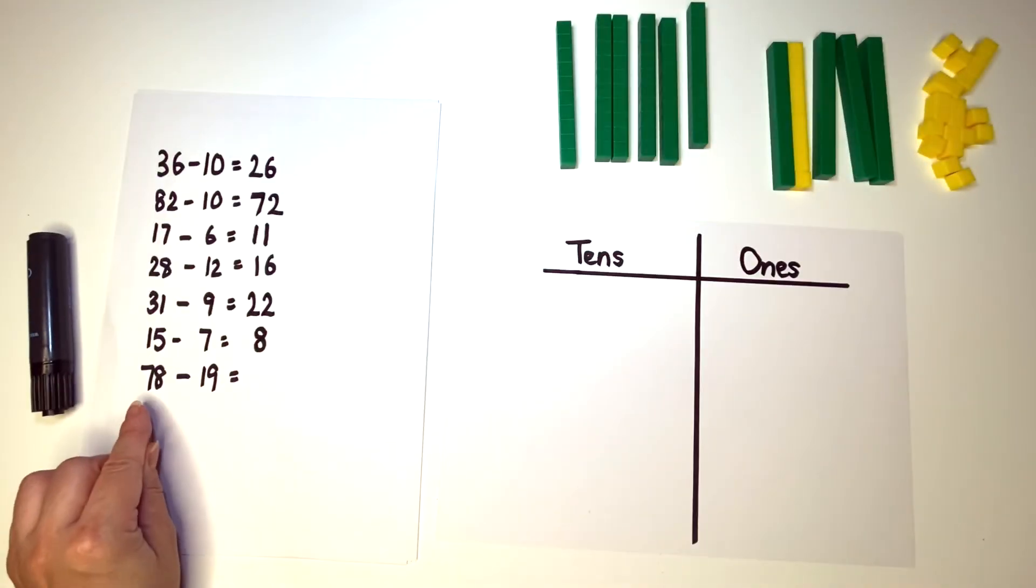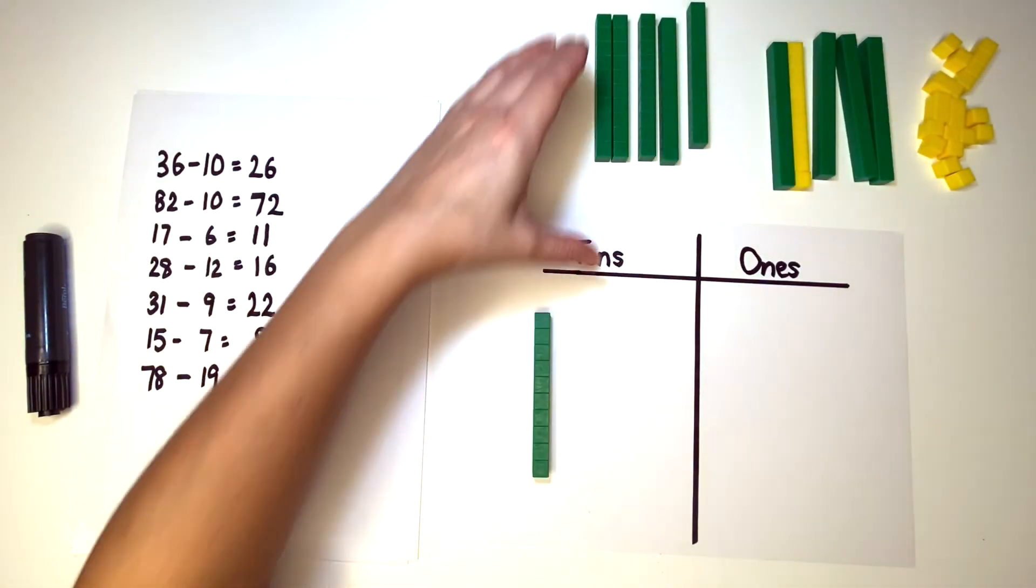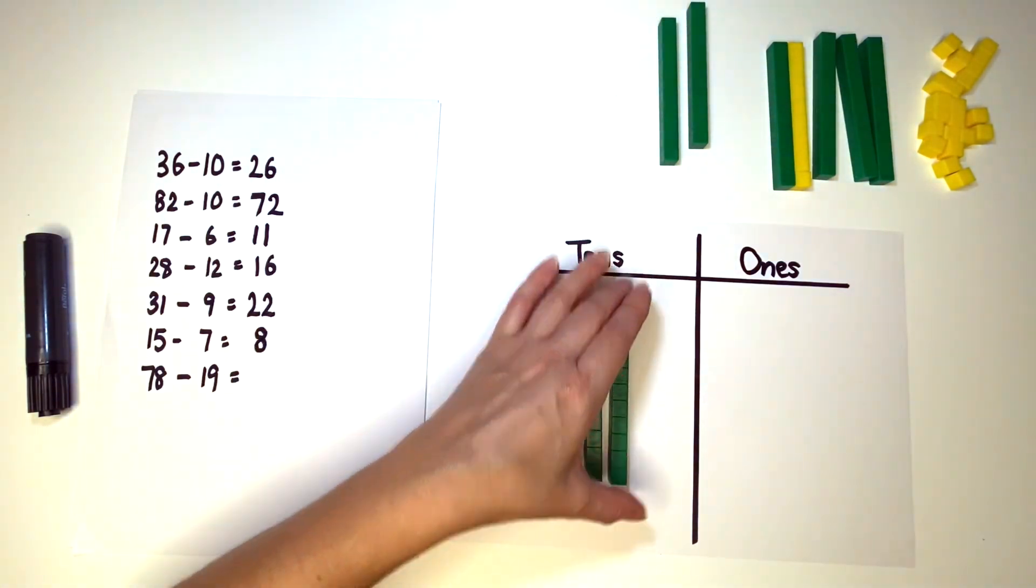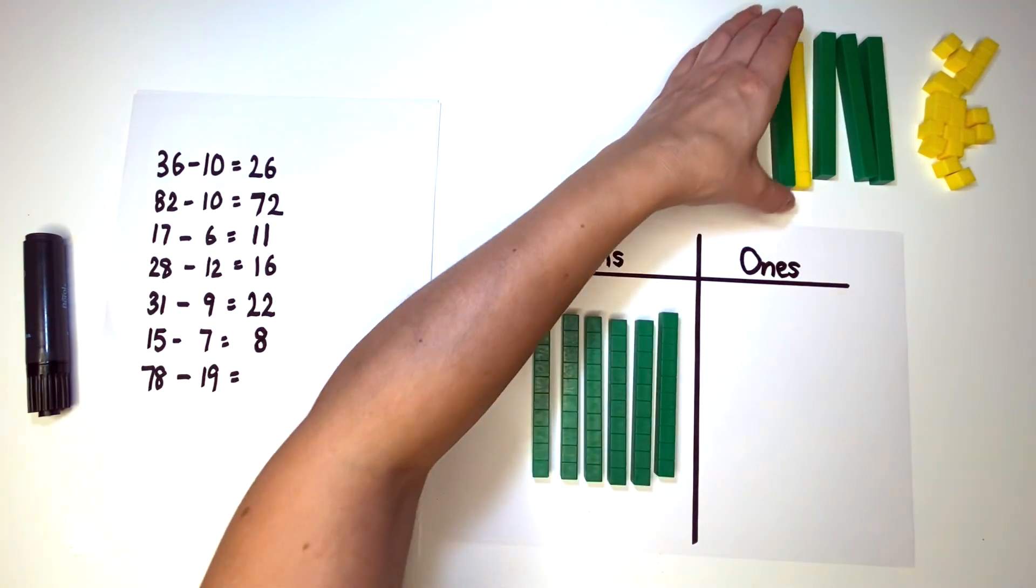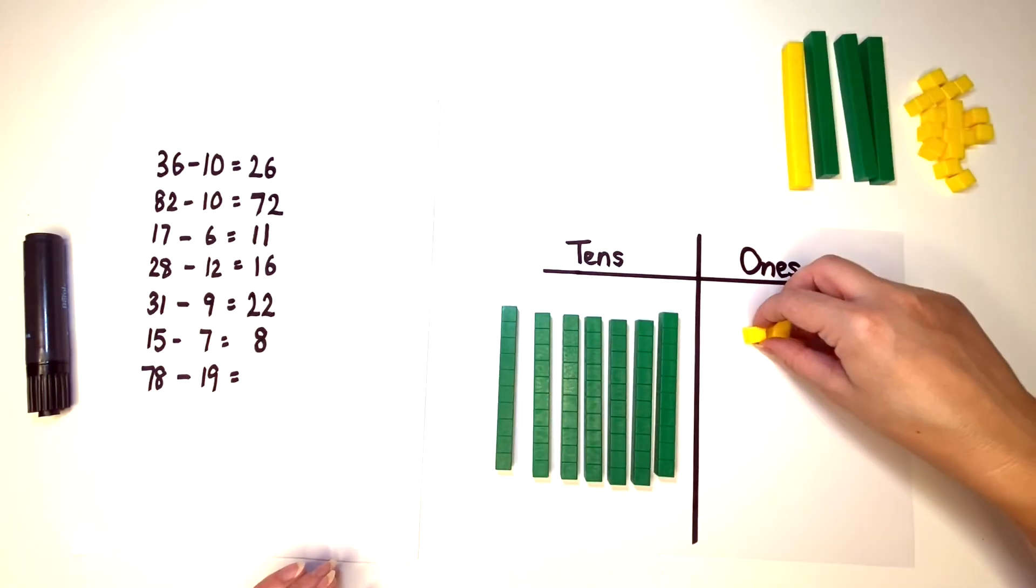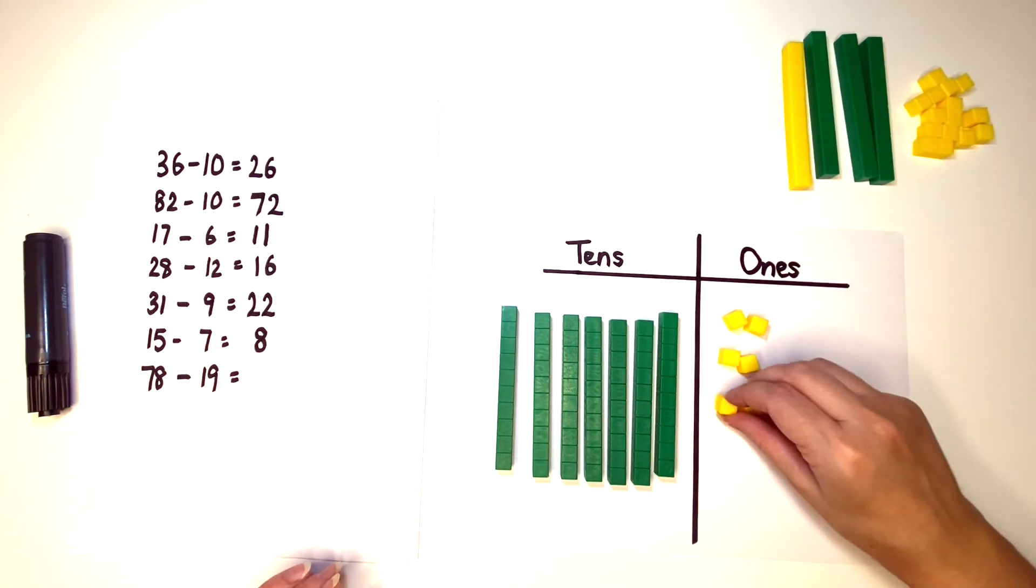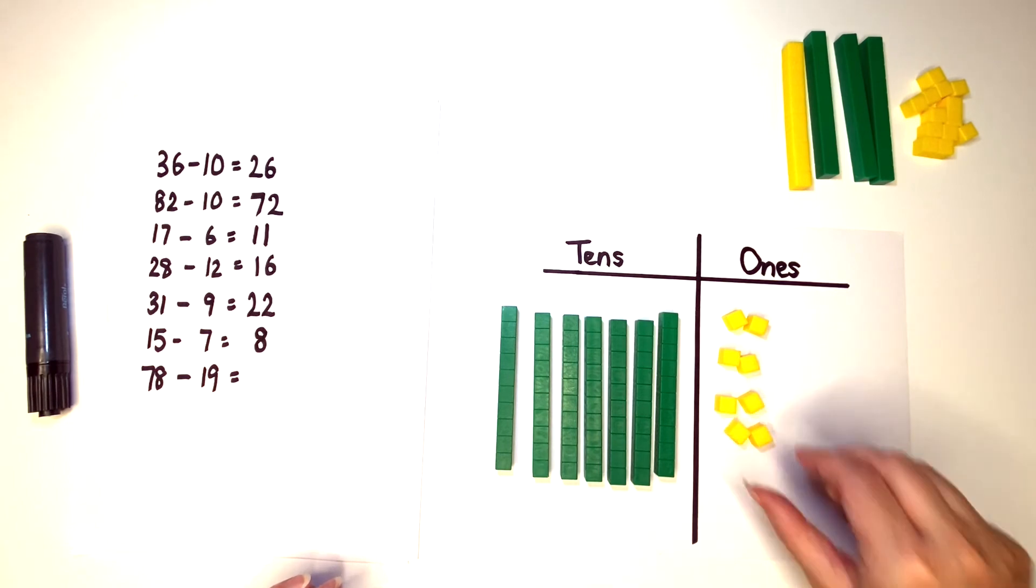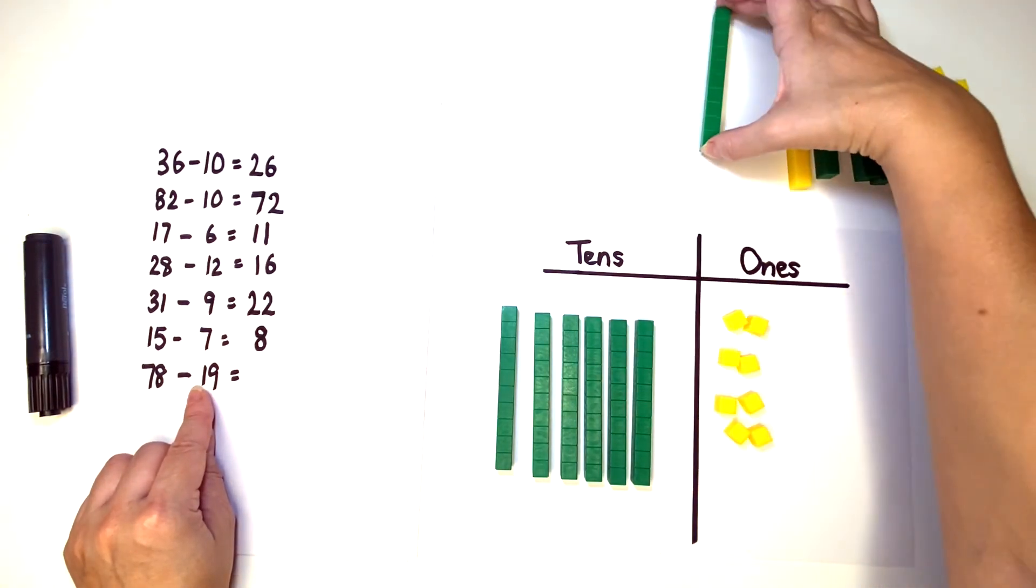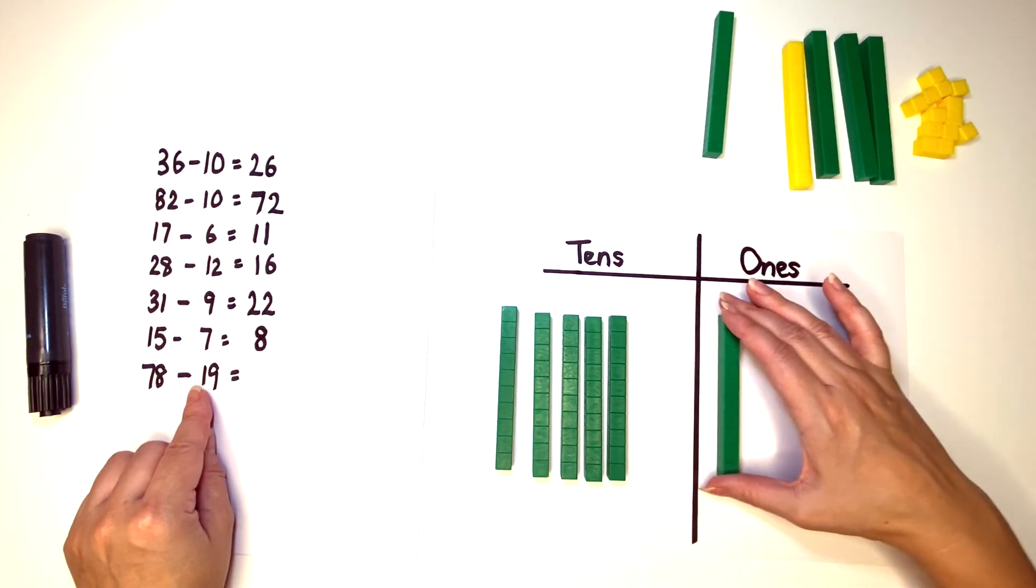Our last number sentence is seventy eight minus nineteen. One, two, three, four, five, six, seven. I need to make my eight. Two, four, six, eight. And this time we're taking away a nineteen. So we're going to take away our ten. And then we don't have enough here to take away a nine. So we need to do an exchange.